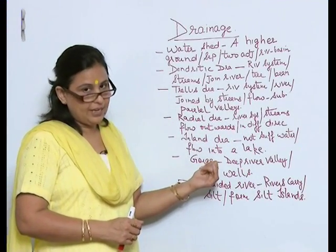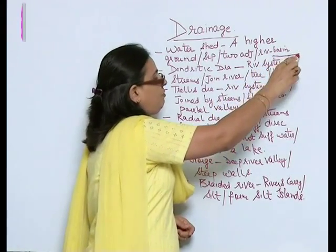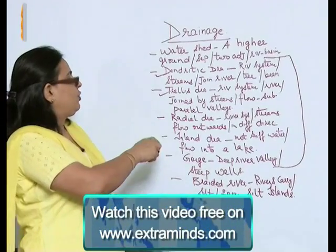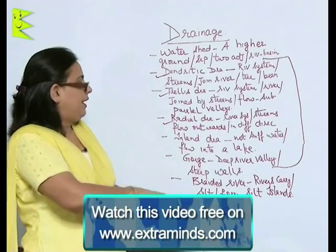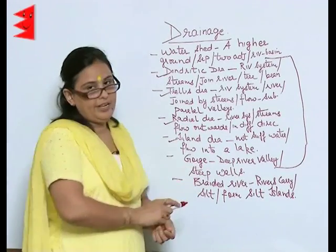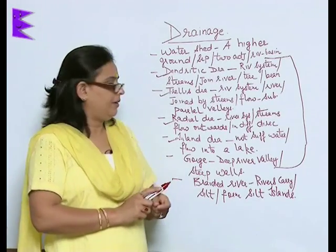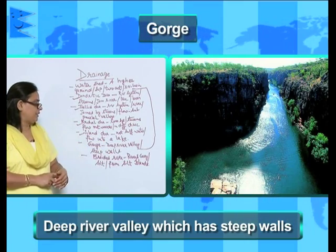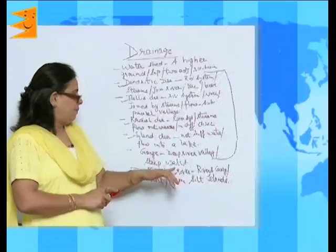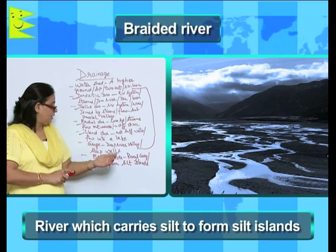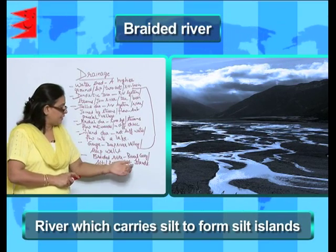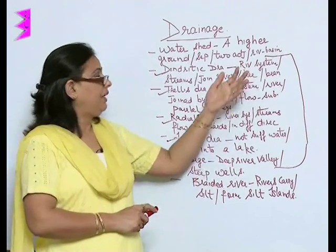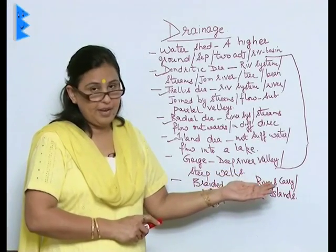Remember, there are four kinds of drainage systems: dendritic — tree-like; trellis — which flows in sub-parallel valleys; radial — wherein streams flow outward; and inland drainage — where the river does not have much water. Gorge is a deep river valley which has steep walls. Next is braided rivers. A braided river is one which carries a lot of silt to form silt islands, which makes the soil very fertile.